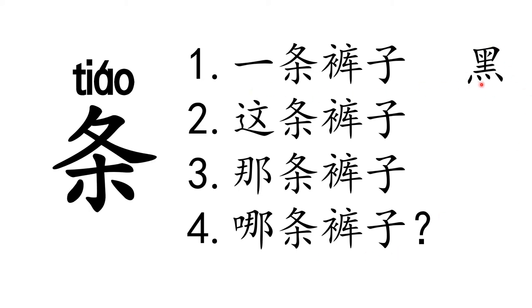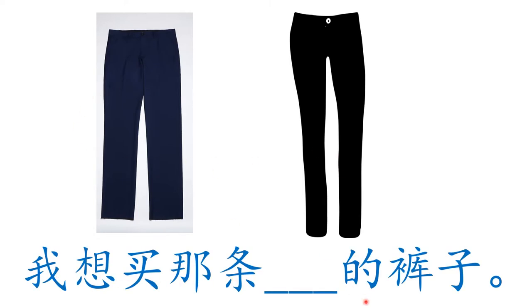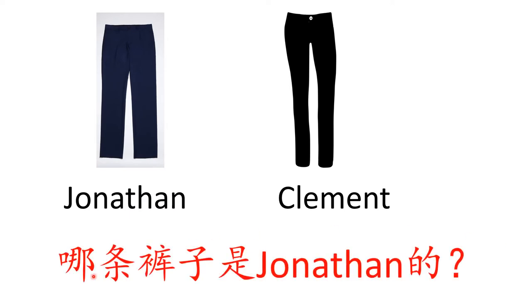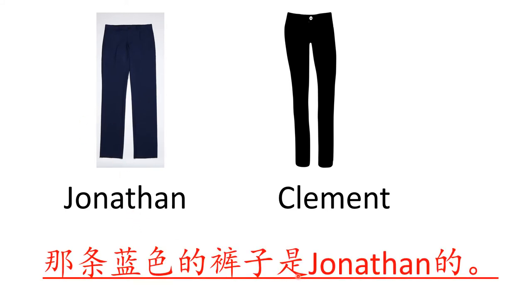With colors: 一条黑色的裤子, 这条白色的裤子, 那条绿色的裤子. 你想买哪条裤子 means 'which trousers do you want to buy?' 我想买那条蓝色的裤子 or 我想买那条黑色的裤子. 那条裤子是Jonathan的 — which trousers belongs to Jonathan? 那条蓝色的裤子是Jonathan的 — that blue trousers belongs to Jonathan.